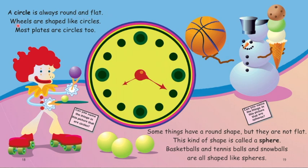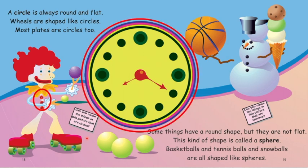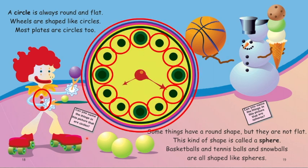A circle is always round and flat. Wheels are shaped like circles; most plates are circles too. Can you name the things in this picture that are circles? Buttons, clock markings on the clock face.